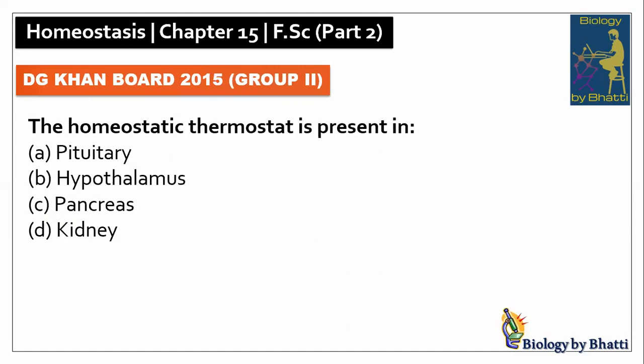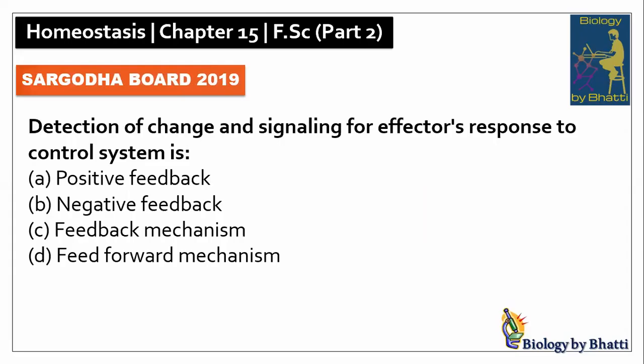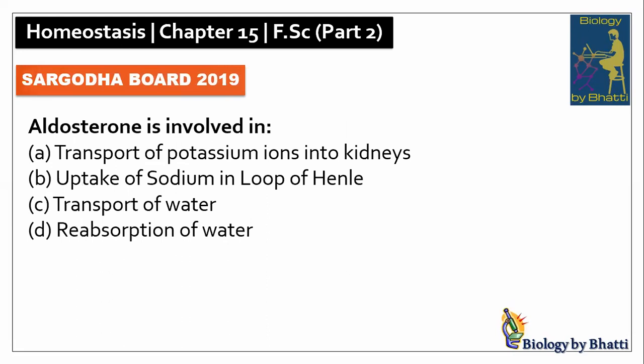DG Khan Board 2015 Group 2: the homeostatic thermostat is present in the hypothalamus, B option. The incidence of calcium oxalate types of stones is 70%, the answer is C option. DG Khan Board 2019: detection of change and signaling for effector's response to a control system is feedback mechanism, the answer was C option.